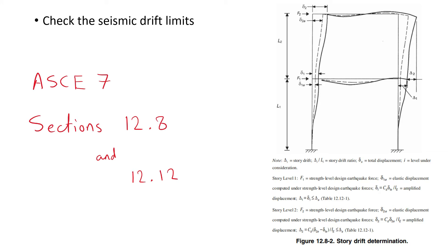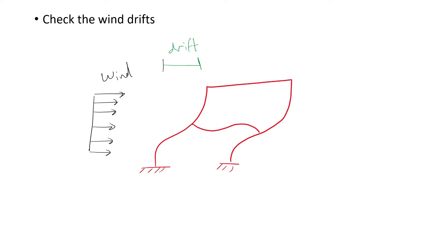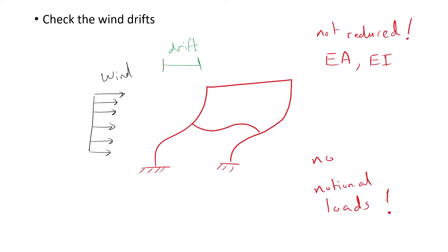Next, check seismic drift limits using nominal member properties according to ASCE 7 Section 12.12 and maximum P-delta effects as prescribed by ASCE 7 Section 12.8.7. Also check wind drifts using nominal member properties for service-level wind loads — note this is a serviceability check, not a code requirement. For moment frames, drift under wind or seismic load levels will typically control the design, so this check should be made first when initially proportioning member sizes. The service drift analysis should not include any stiffness reduction or notional lateral loads associated with the direct analysis method.